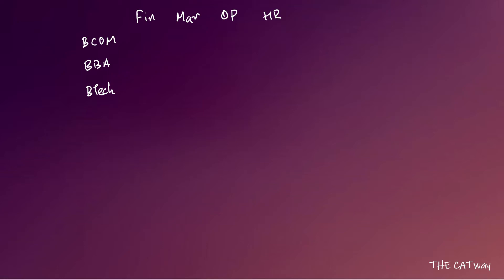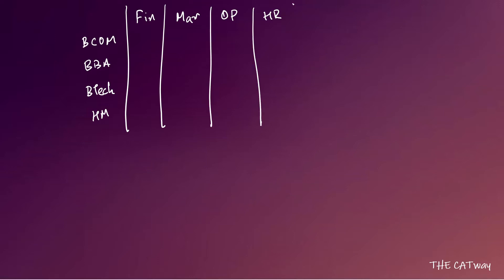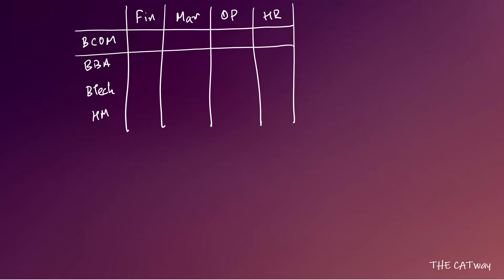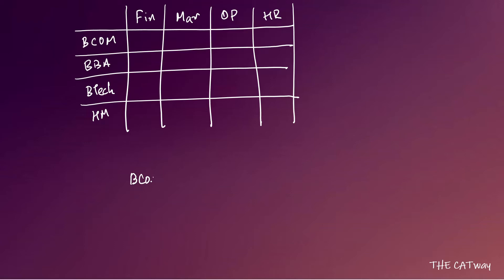Let's set up the tables. The first table will have Finance, Marketing, Operations, and HR as columns, and BCom, BBA, BTech, and Hotel Management as rows. The second table will similarly map undergraduate degrees to the four streams.